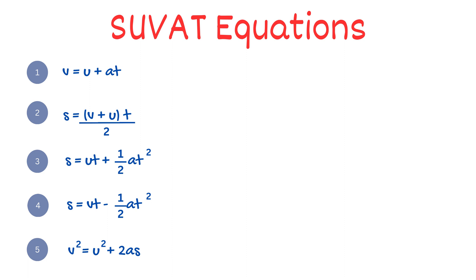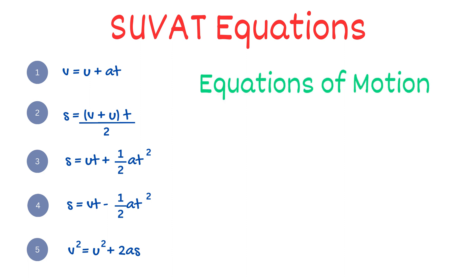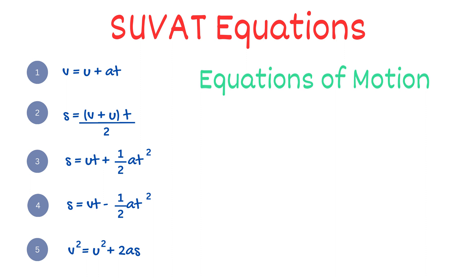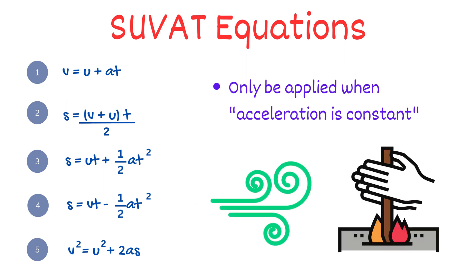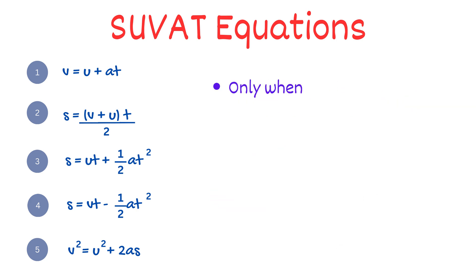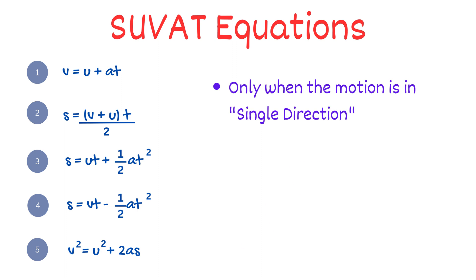These equations are also known as equations of motion. While applying them, you have to be careful about two things: they can only be applied when the acceleration is constant, so you may have to ignore factors like air resistance and friction; and they can only be applied when the motion is in a single direction — so if your motion changes direction, you cannot apply these equations.